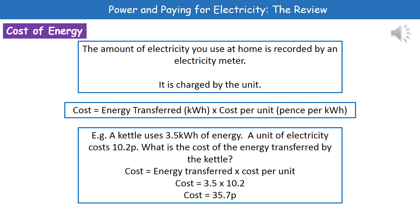One thing to bear in mind is that you could have a question worth 3 marks that uses the cost calculation together with the energy transfer calculation. The general rule is: if it's worth 2 marks, it only has one stage; if it's worth 3 marks, there's probably a second stage, meaning you use your answer from the first calculation in the second one.